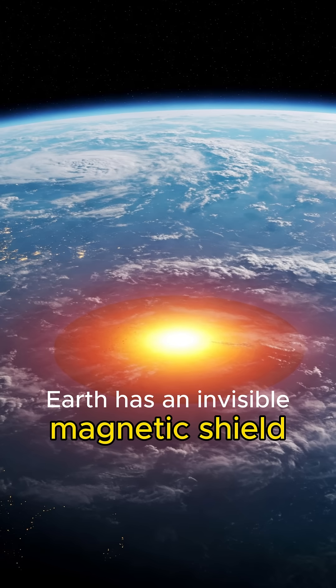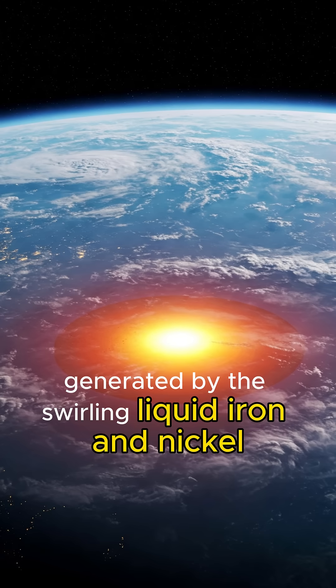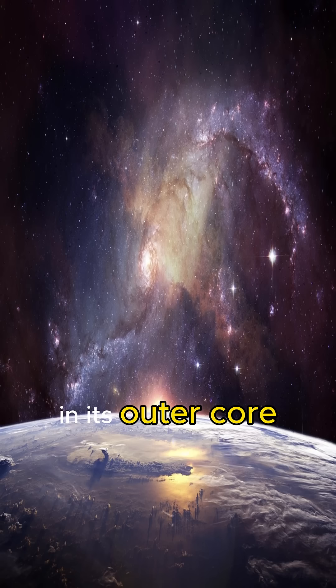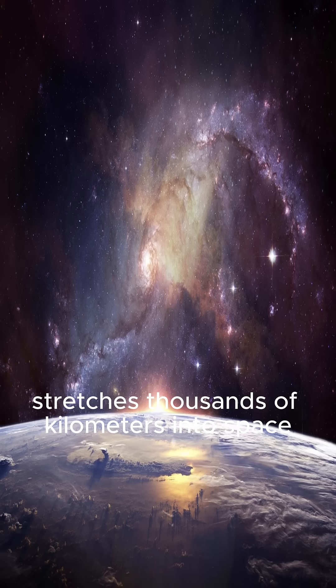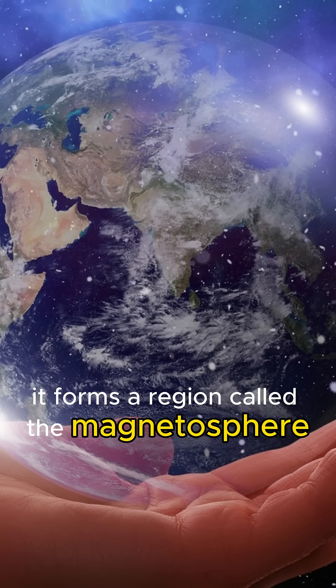Number two, Earth has an invisible magnetic shield generated by the swirling liquid iron and nickel in its outer core. Earth's magnetic field stretches thousands of kilometers into space, forming a region called the magnetosphere.